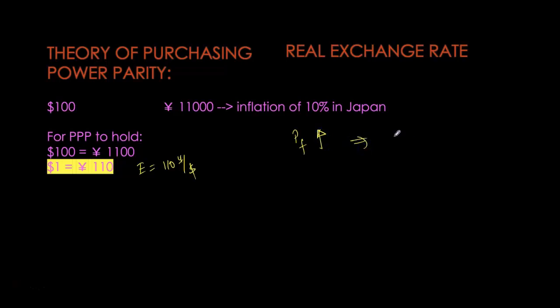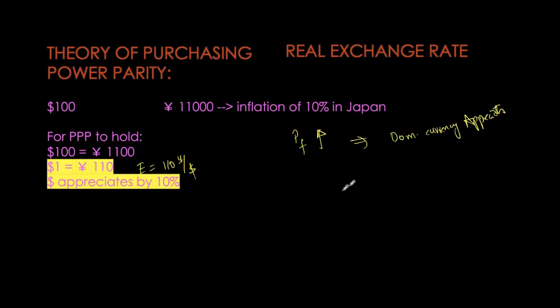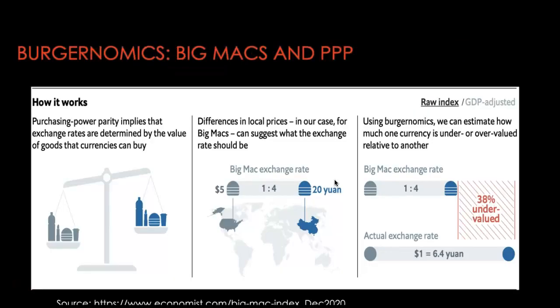Purchasing power parity does not really hold in the short run. However, if we look at long-term data, we do see that real exchange rates tend to converge towards one. Remember, when the real exchange rate is one, purchasing power parity holds. If it is not equal to one, it tells us in which country we can find the good relatively cheaper, and what will happen to the currency in the long run — whether it will appreciate or depreciate — so that the exchange rate in the long run is again equal to one.